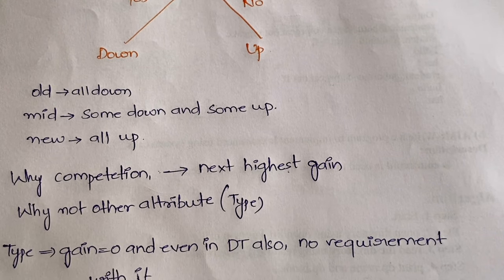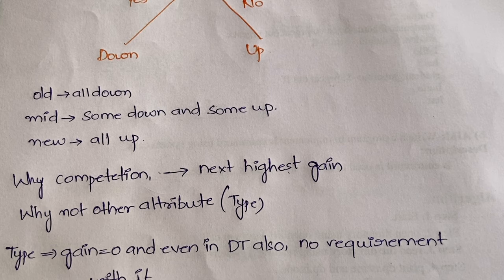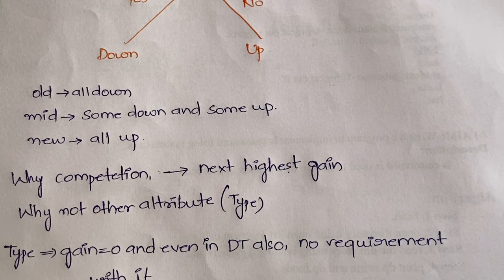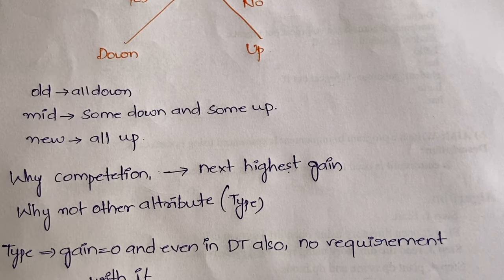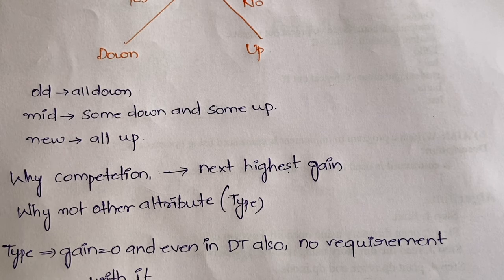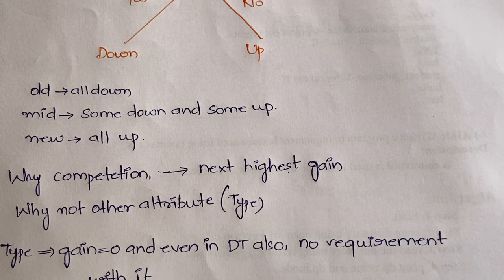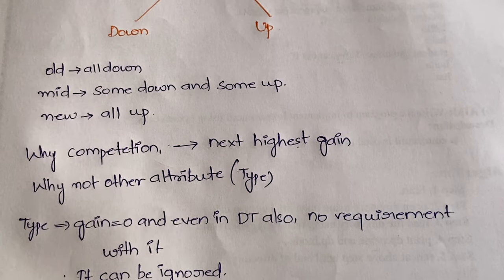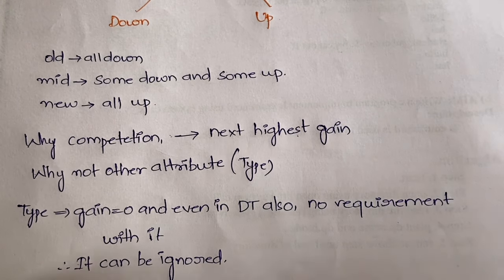For type, the gain value is actually zero, and there was no requirement of type while constructing the decision tree. So you can ignore type or just leave it.